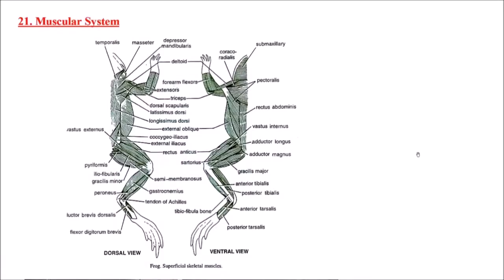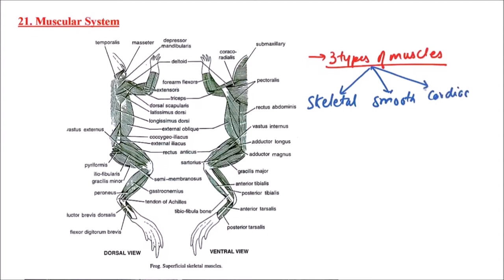Welcome to Studio Biology. In this video I am going to discuss the muscular system of frog. There are three types of muscles in frog: skeletal, smooth, and cardiac. The skeletal muscles are associated with the skeletal system.